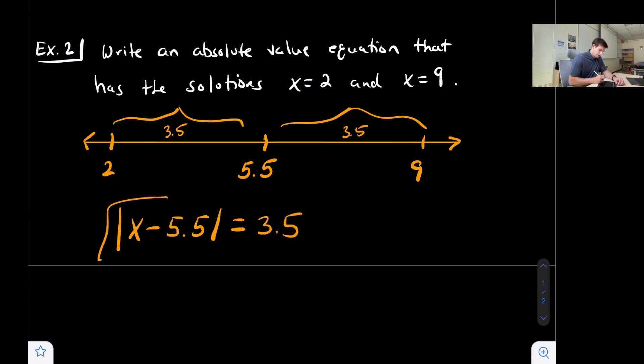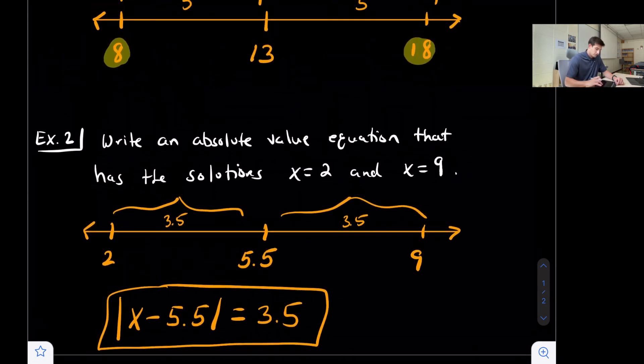So we get our absolute value equation of absolute value x minus 5.5 equals 3.5. That is how we write an absolute value equation given two solutions.